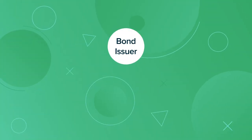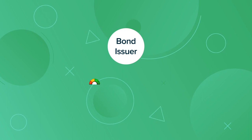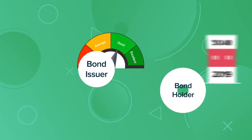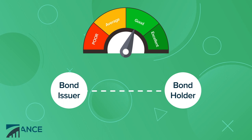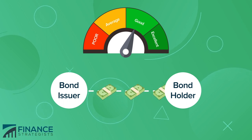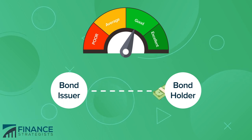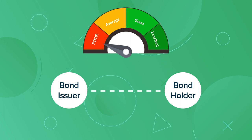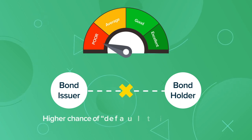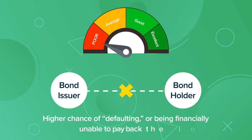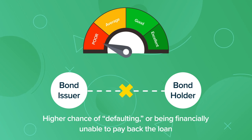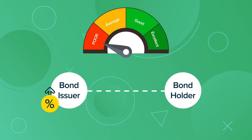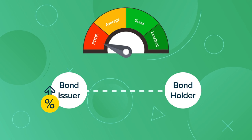A bond's coupon rate is affected by the issuer's credit rating and the time to maturity. Credit rating refers to an estimation of how likely the issuer is to be able to pay the dues of a bond. Poor credit rating is an indicator that a bond issuer has a higher chance of defaulting or being financially unable to pay back the loan. Bond issuers with a poor credit rating should have a higher coupon rate to compensate for the additional risk.